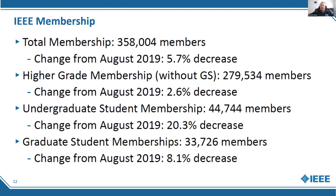Higher grade membership, without including graduate students, was about 280,000 members — a decrease of 2.6%. Where we're seeing the largest decrease is because some universities are not open worldwide, and some are just now resuming, whether in person or virtually. Our undergraduate student membership is currently about 45,000 members, representing a 20% decrease from last year.